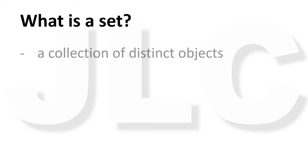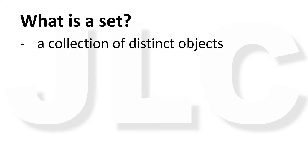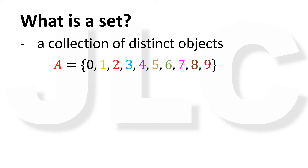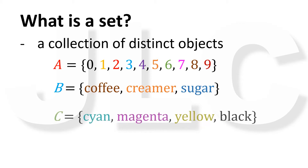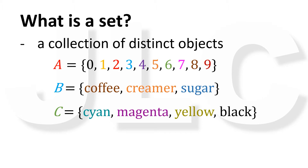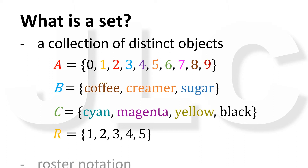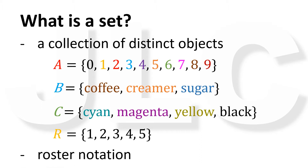What is a set? A set is simply a collection of distinct objects. For example, we can say that A is a set consisting of the Arabic numerals. B is a set whose elements are coffee, creamer, and sugar. C is a set of subtractive colors. R is a set of non-negative integers less than 6. This kind of notation is called the roster notation, where the elements of the set are listed and enclosed in braces.